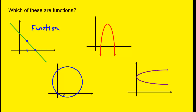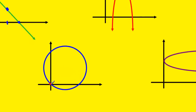What about the circle — is the circle a function? Well, the classic example is: what if x is 0? When x is 0, there's a point that hits right here and another point that hits right here. This y value is not the same as this y value, so this is not a function.